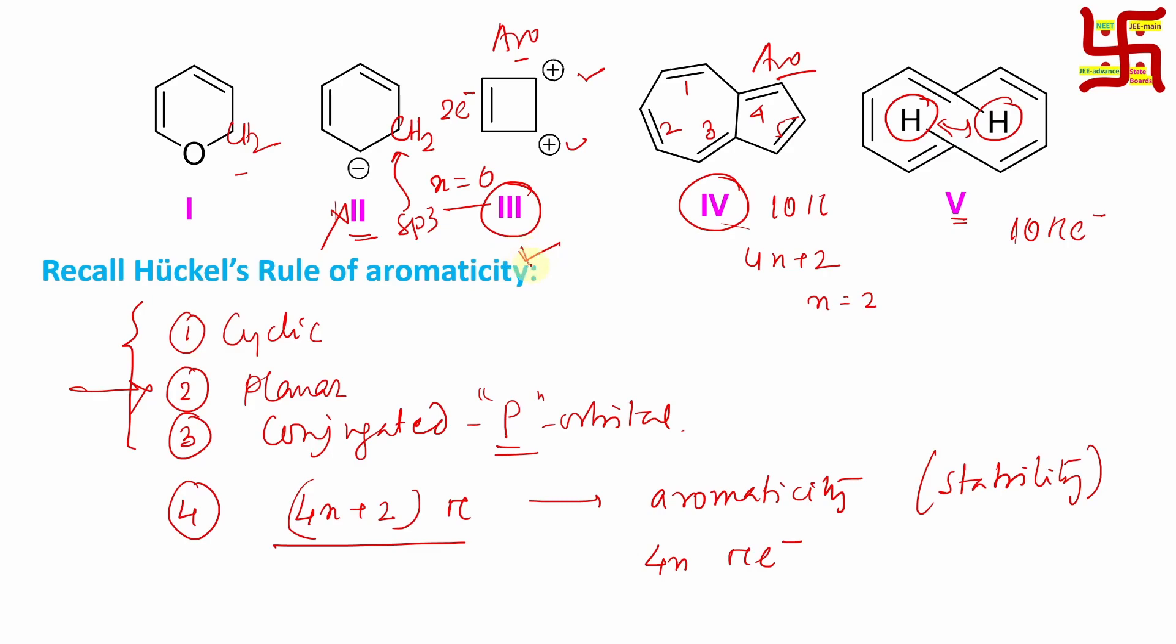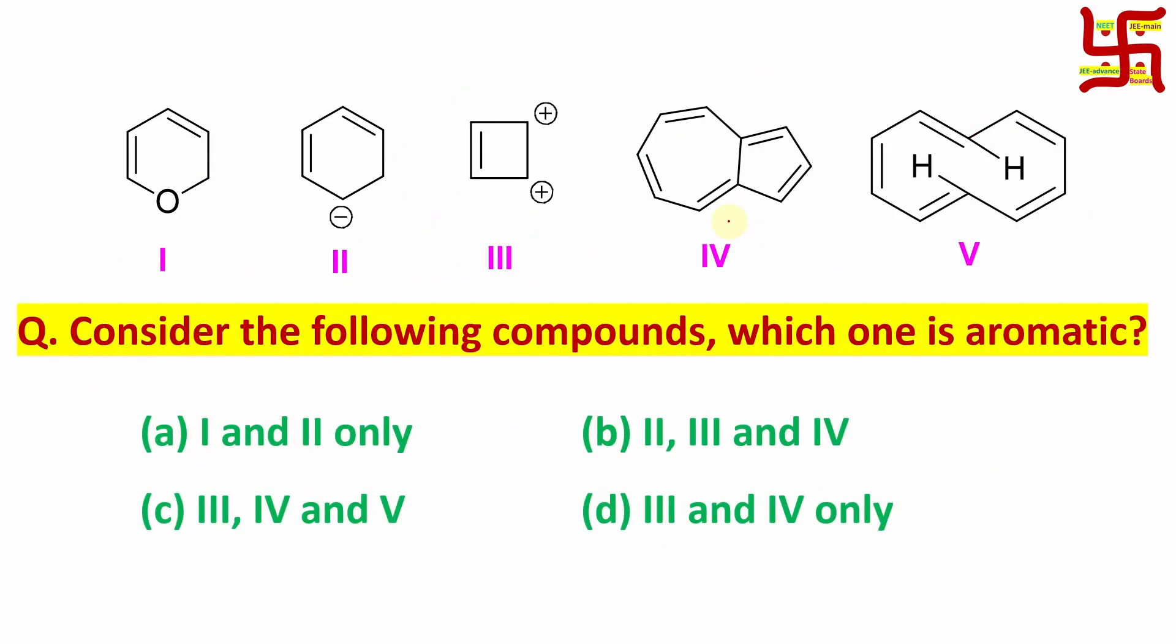Option 3 and option 4 they are aromatic. So answer is option 3 and 4 only. So option D is the answer. And why not aromatic? Now I have also explained.